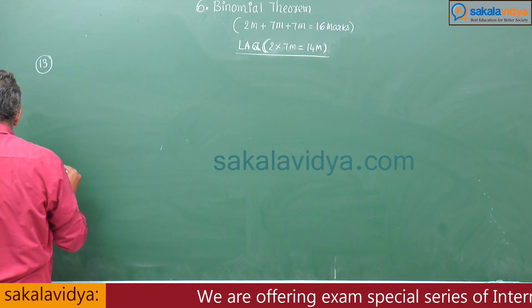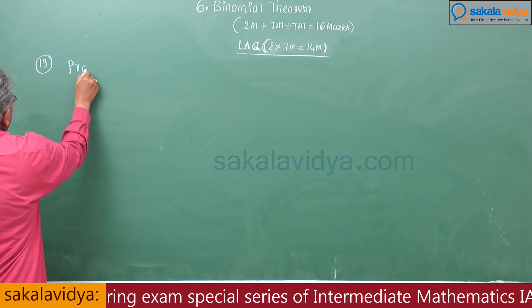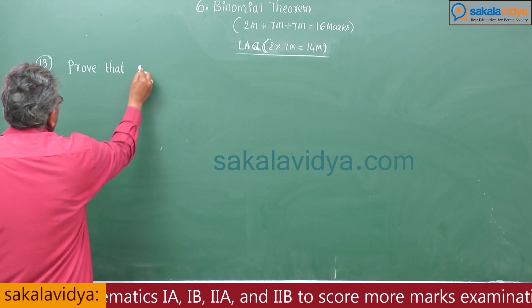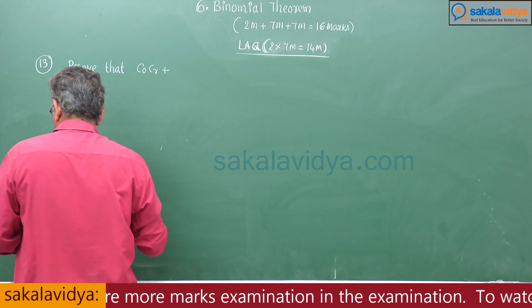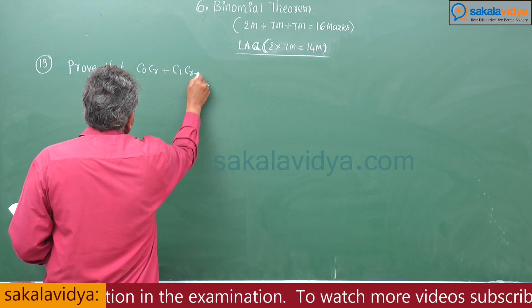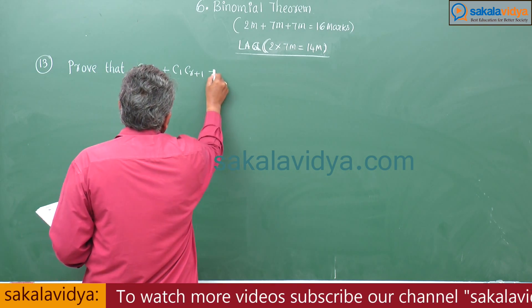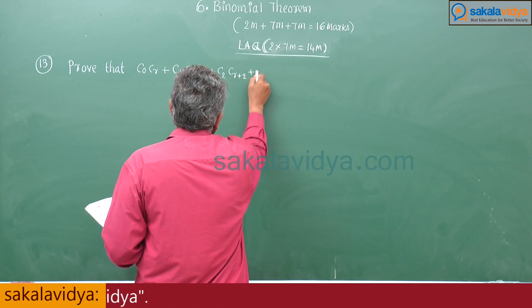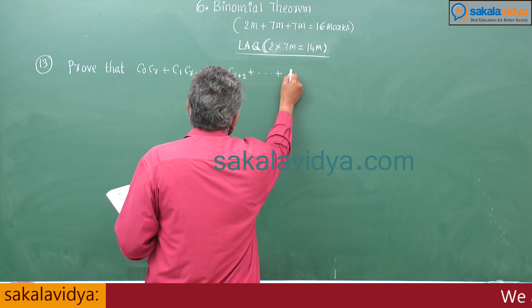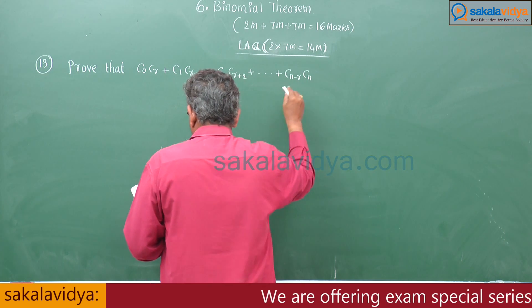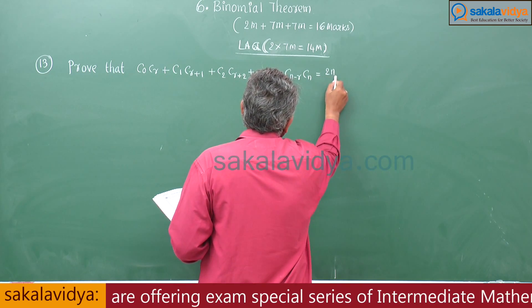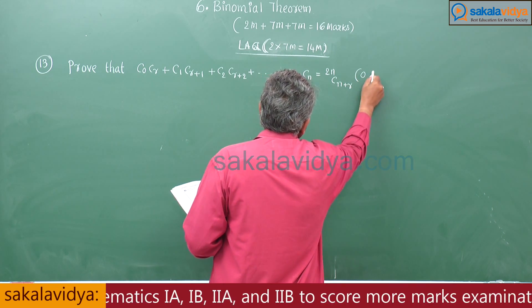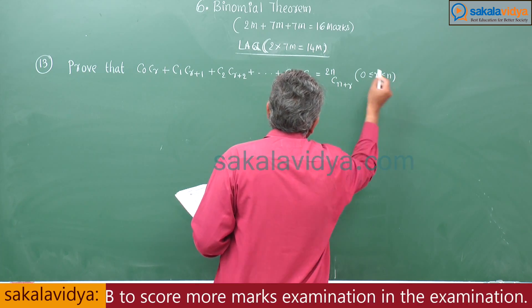Problem 13. Prove that C₀·Cᵣ + C₁·Cᵣ₊₁ + C₂·Cᵣ₊₂ + ... + Cₙ₋ᵣ·Cₙ = 2nCₙ₊ᵣ, where 0 ≤ r ≤ n. This is the given condition.